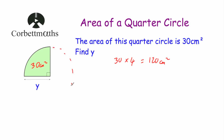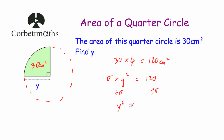If we have a whole circle, the area of the whole circle would be 120 centimetres squared. We can use the formula pi r squared equal to 120 to find y, the radius. So pi times y squared equals 120. We work backwards — divide both sides by pi. Dividing pi y squared by pi leaves us with y squared, and 120 divided by pi gives us 38.19718 and so on.